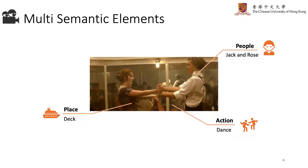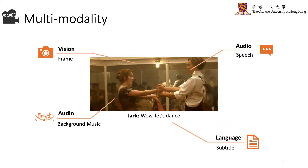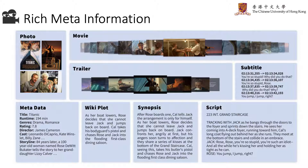We found that movie is such an ideal data source to study this. Within a movie, there exist multi-semantic elements conveying the information of who, where, and what. Movie contains abundant multi-modal information, including vision, audio, and language.